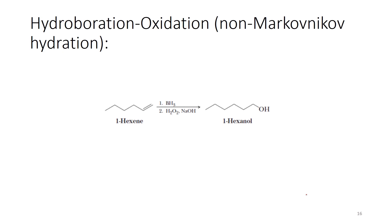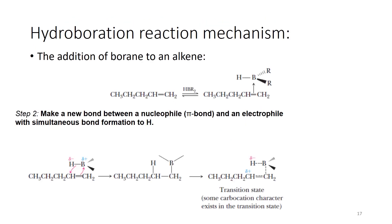Moving to the last reaction, which does not follow Markovnikov's rule: if I look at 1-hexene and add borane in the presence of hydrogen peroxide, what I expect by Markovnikov's rule would be the addition of hydroxide to the carbon carrying the least number of hydrogens. Instead, what I get is 1-hexanol, where the hydroxyl is added to the carbon carrying the largest number of hydrogens. The reason is that the transition state has carbocation character, where the carbocation forms over the carbon carrying the least number of hydrogens — this is why the boron is added to that side.